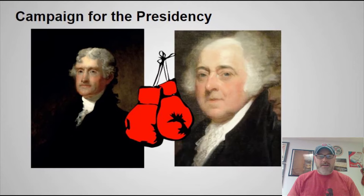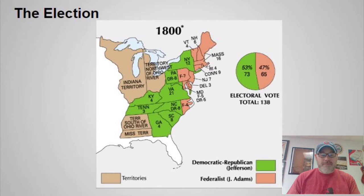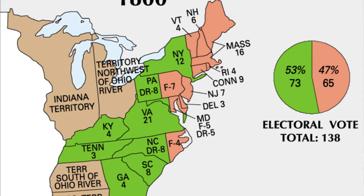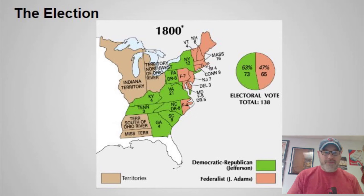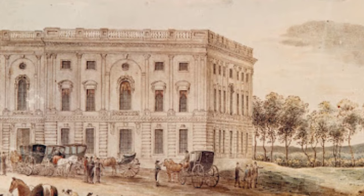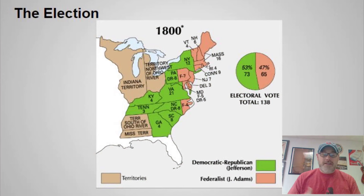Jefferson narrowly won 73 electoral votes to 65. What's interesting is that Jefferson and Aaron Burr, his running mate, actually tied for the presidential election, because the ballot didn't specify who you were voting for as president versus vice president. So the election had to be decided in the House of Representatives. The Democratic Republicans had swept in and taken control of the House, but before they could be sworn in, the Federalists were going to decide this election. One of the key people who decided it was Alexander Hamilton, a Federalist Party leader who swayed the vote towards Jefferson, seeing him as the lesser of two evils.